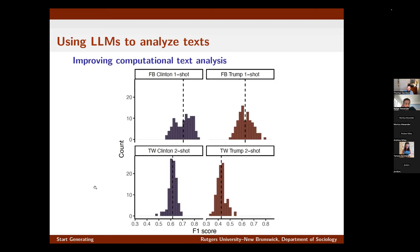Can you just go back one slide? How do you get the underlying truth — the F1 score is measuring accuracy against what? We have held-out test sets where we have, in this case, around 100 tweets or Facebook comments that had been annotated. We're using these models to predict the labels for those and seeing how well the model performs out of sample.